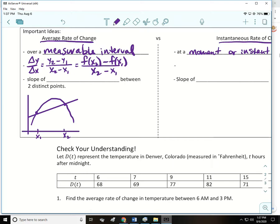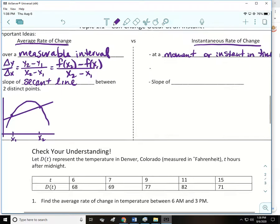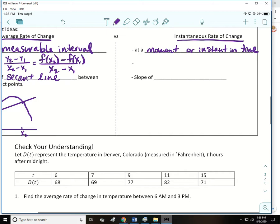And that line, this line right here that goes between two points on our graph, do you guys know what that's called? That's a secant line. So it's the slope of the secant line between two points. Let's talk about the difference in instantaneous rate of change.